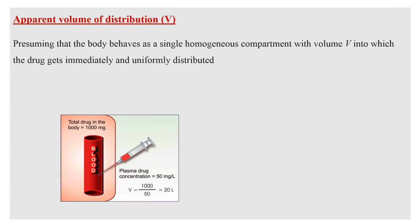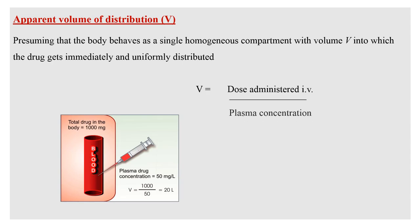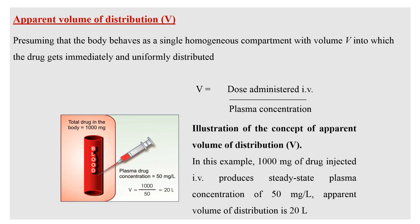Coming to the concept of volume of distribution, assuming that the body behaves as a single homogenous compartment with volume V into which the drug gets immediately and uniformly distributed. Volume of distribution, or apparent volume of distribution, is calculated as the ratio of dose administered intravenously to the plasma concentration. For example, 1000 mg of a drug injected intravenously produces a steady-state plasma concentration of 50 mg per litre, giving an apparent volume of distribution of 20 litres.